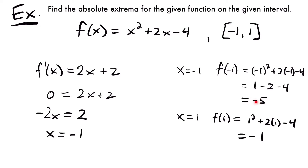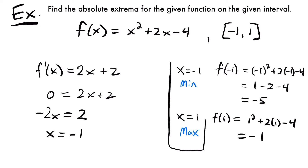Now we compare our two y values: negative 5 and negative 1. Whichever is greater is our max on this interval, and whichever is smaller is our minimum. So negative 5 is our minimum and x equals 1 is our maximum. For this function on this particular interval, our absolute maximum is at x equals 1, and our absolute minimum is at x equals negative 1. You could also express these as coordinates: negative 1 comma negative 5, or 1 comma negative 1.